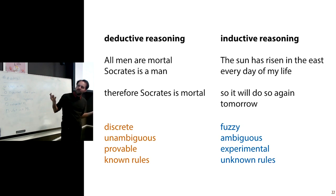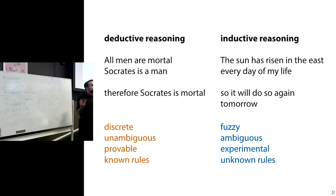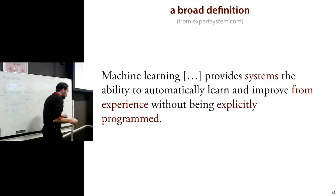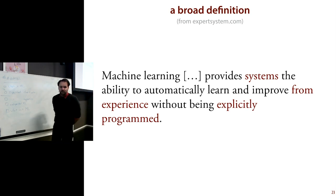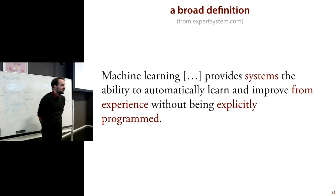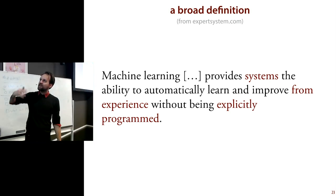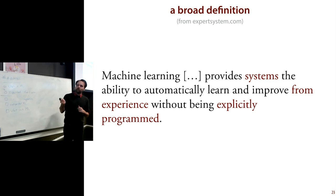Computers are discrete, unambiguous, and operate on provable, known rules. Inductive reasoning is fuzzy, ambiguous, sometimes works, and we don't know all the rules. Nevertheless, we still try. Over the years we've come up with a few ways of teaching machines how to learn pretty well. We still don't know all the rules about when it does and doesn't work, but in some cases it does. Here's a very broad definition that should capture everything you might call machine learning: it's a technology that provides systems the ability to automatically learn and improve from experience without being explicitly programmed to do so.